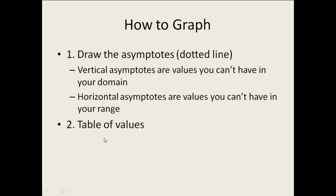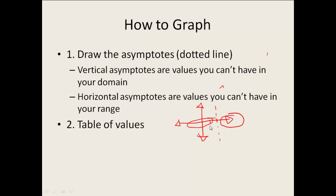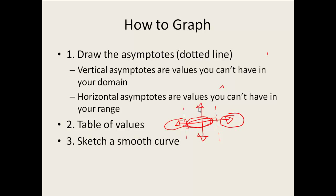Once you get your asymptotes sketched, the second step is to do a table of values based off of where your vertical asymptote is. For example, if we have a vertical asymptote at x equals 2, you need to pick points to the right — like 3, 4, 5, and 6 — and points to the left — like 1, 0, and negative 1. If your asymptote were at negative 5, you'd pick points to both sides of negative 5. Always use your vertical asymptote as a guideline for your table. Once you have your table, plot your points and sketch your smooth curve.